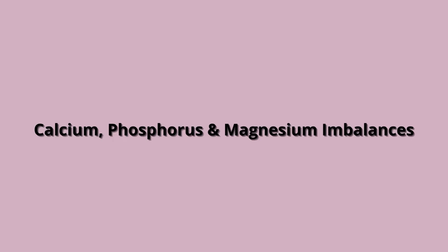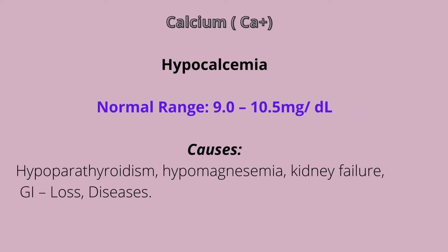In this video, we're going to talk about our calcium imbalances, magnesium, as well as phosphorus imbalances. So calcium — our normal range for calcium is between 9.0 to 10.5 milligrams per deciliter. Hypocalcemia means it's below 9.0. Some of the causes include celiac disease, Crohn's disease, alcohol use disorder, GI loss, inadequate intake, vitamin D deficiency, kidney failure, hypomagnesemia, as well as hypoparathyroidism.